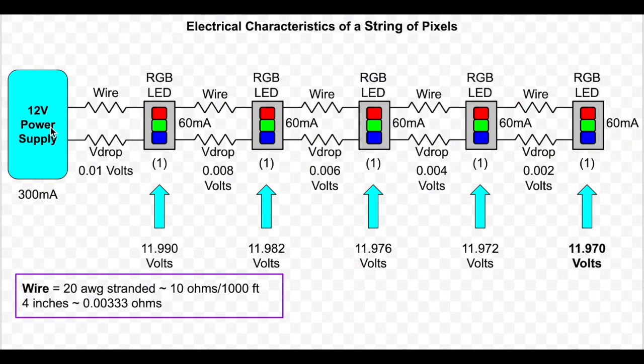If we take a look at the electrical characteristics of a string of pixels, it will be easier to understand. Here is a simple circuit with a 12-volt power supply and five RGB LEDs. I've left the controller out to simplify the circuit.